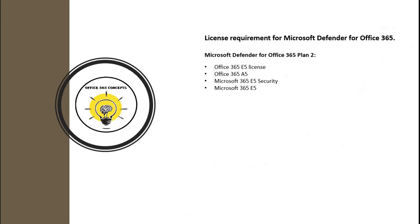Microsoft Defender for Office 365 Plan 2 is included in Office 365 E5 license, Office 365 A5, Microsoft 365 E5 Security, and Microsoft 365 E5 license. Microsoft Defender for Office 365 Plan 1 is included in Microsoft 365 Business Premium subscription. If you have any other subscription, you can go for Microsoft Defender Office 365 stand-alone license as well.